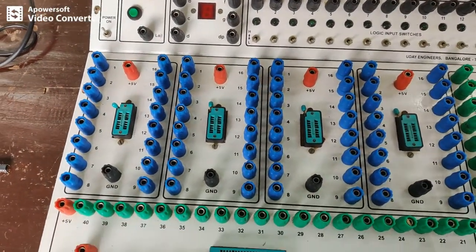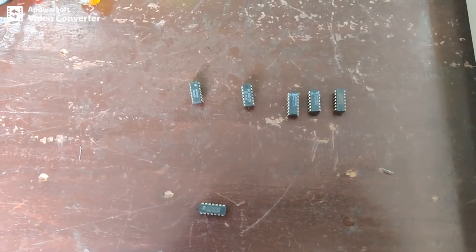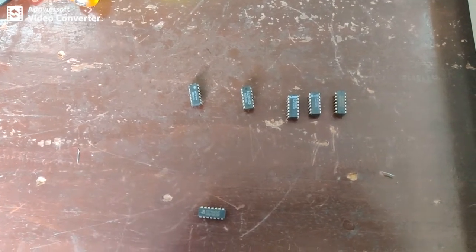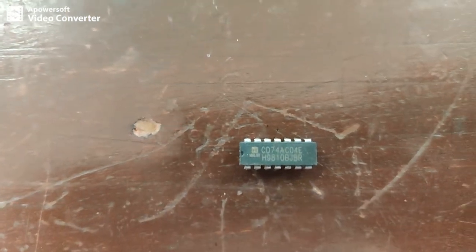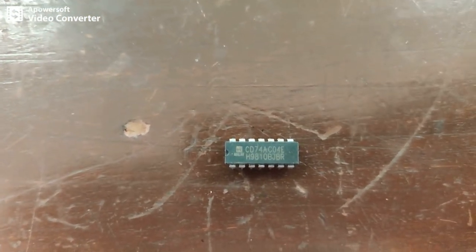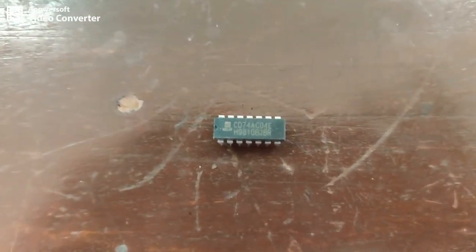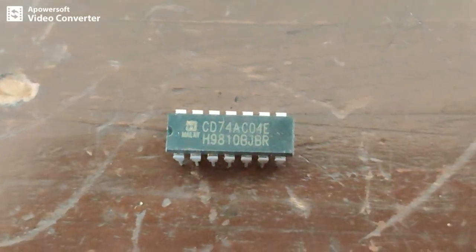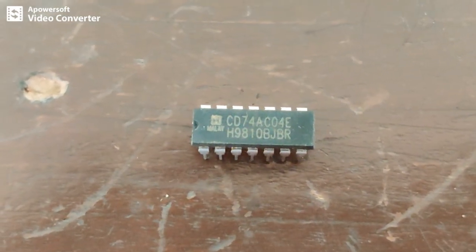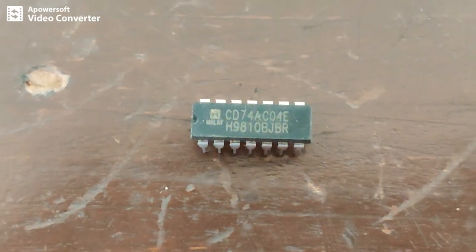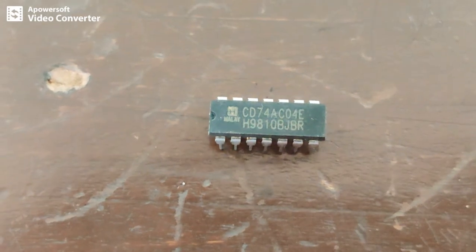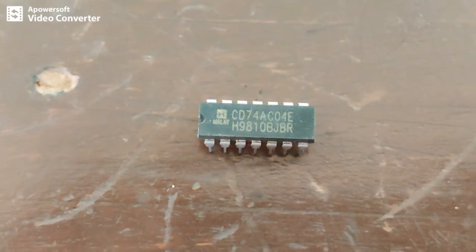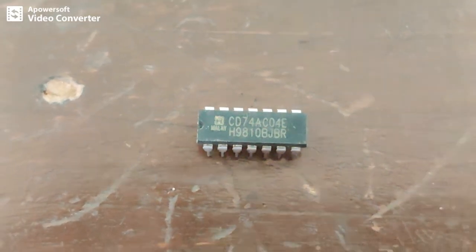Now first here I have kept some ICs. In that, a couple of ICs I will take you to explain how it works. First let me take IC 7404. Normally you will identify IC by its number. You can see there CD 7404. That means in between some numbers are there. You leave it 7404. That means this is a NOT gate IC. I have explained in my previous video what is a NOT gate. And 7404 IC contains 6 gates inside that.